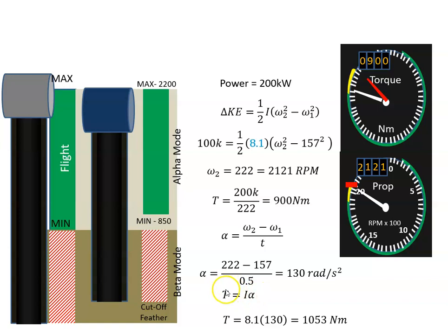In this case the torque eventually stabilized at 900 Newton meters, but just for an instant when the power lever was slapped forward, the torque went up to 1053, which could have over-torqued the aircraft and that can have serious consequences.